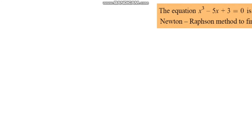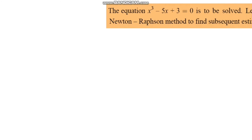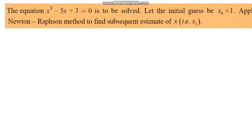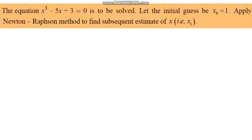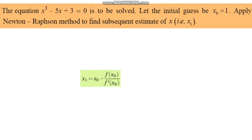The equation x³ minus 5x plus 3 = 0 is to be solved with initial guess x₀ = 1. Apply the Newton-Raphson method to find the subsequent estimate x₁. The formula is: x₁ = x₀ minus f(x₀) divided by f'(x₀).